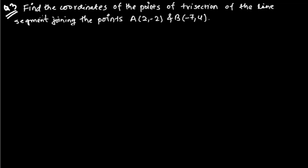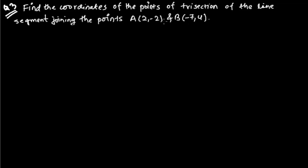Hello friends, here is the third type of problem in section formula of coordinate geometry. The question says: find the coordinates of the points of trisection of the line segment joining points A and B. So we need to find out the two such points that will divide the line joining this point and this point.